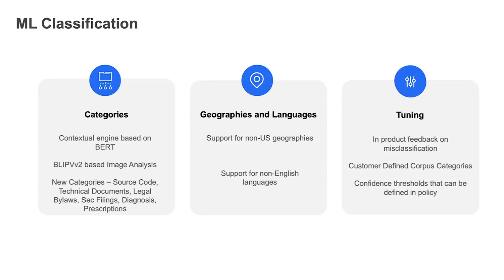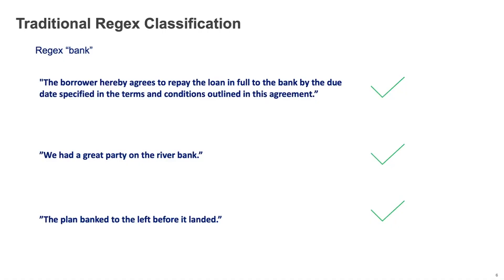We also provide different thresholds to define ML classification in your policy. For example, in a traditional DLP classification, if you wanted to classify a financial document, maybe you started with a simple regex for the word 'bank.' The first sentence is a financial document: 'The borrower hereby agrees to repay the loan in full to the bank.' But the word 'bank' can also occur in other sentences — 'we had a great party on the river bank,' or 'the plane banked to the left before it landed.' The bottom two cases are typically false positives, and this is the bane of regular expressions.